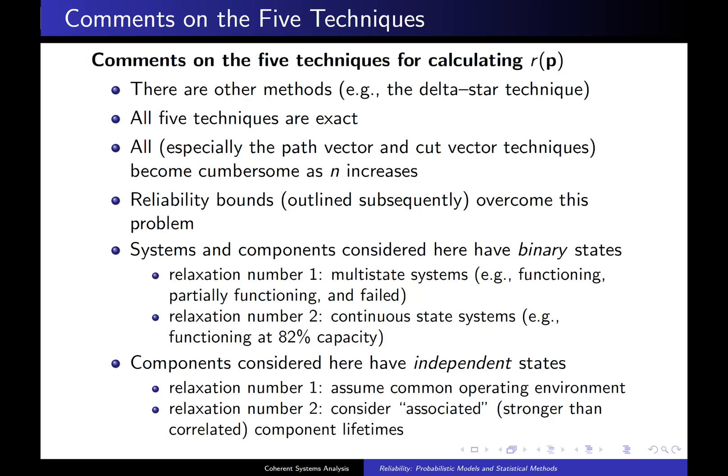Here are some comments on the five techniques for calculating r(p). There are other methods than these five. For example, one of them is called the delta-star technique. Number two, all five of these techniques are exact. They will give you the exact system reliability if you have the correct component reliabilities, and the component failures are independent.